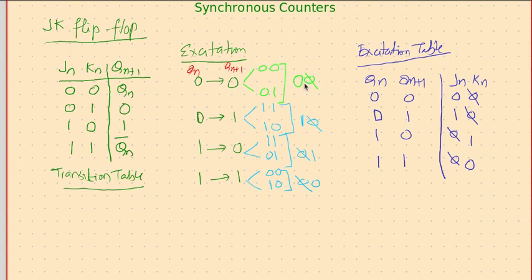Same way, 0 to 1 transition: yes, there is change, that means you need to toggle it 1,1, or set the output so 1,0. So it says J should be 1, K can be anything.